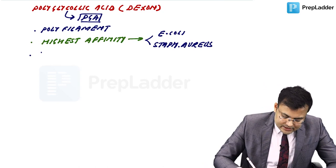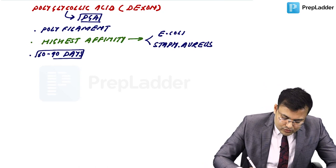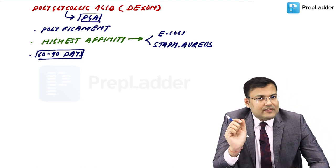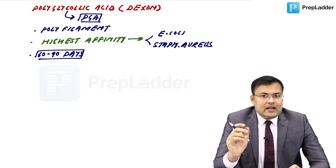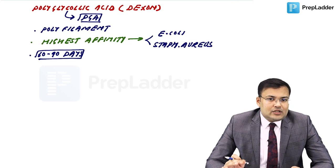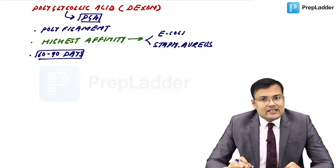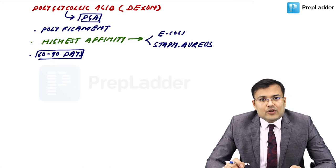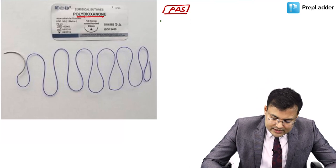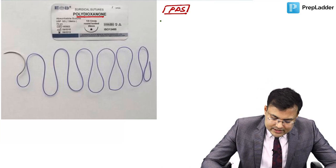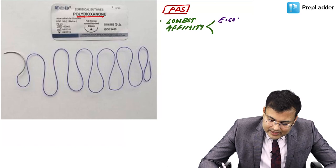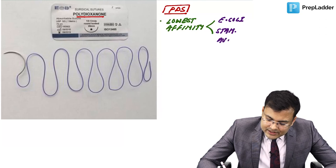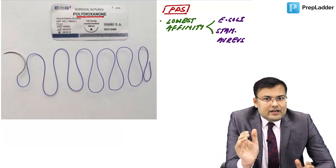Dexin is absorbed in 60 to 90 days. In contrast, PDS (polydioxanone) has the lowest affinity for adherence to E. coli and Staphylococcus aureus, meaning a lesser risk of infection. It is absorbed in 180 days, making it suitable for anastomoses with high risk of anastomotic leak, such as pancreaticojejunostomy in the Whipple procedure.